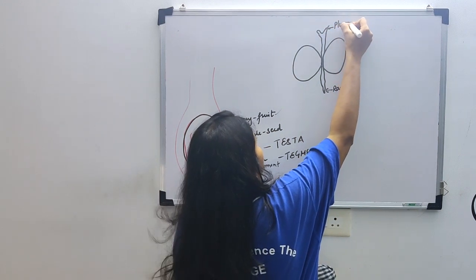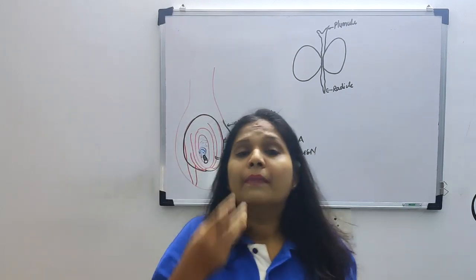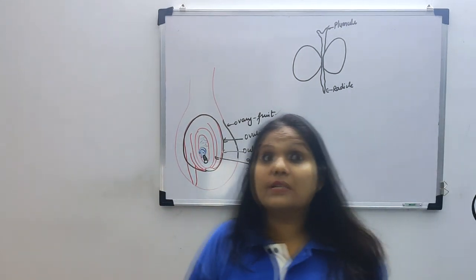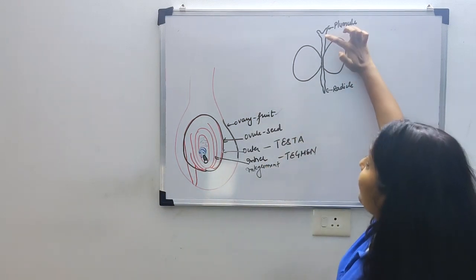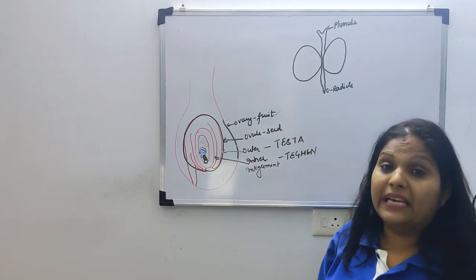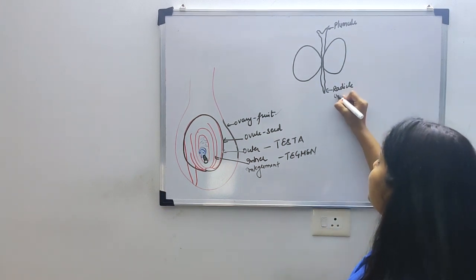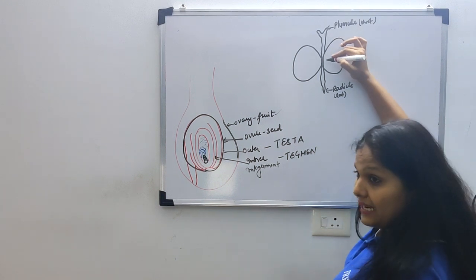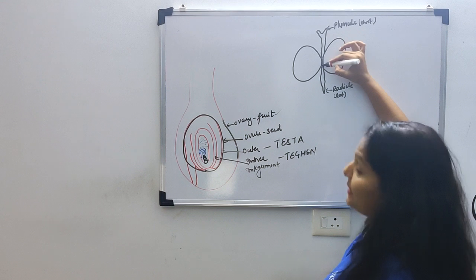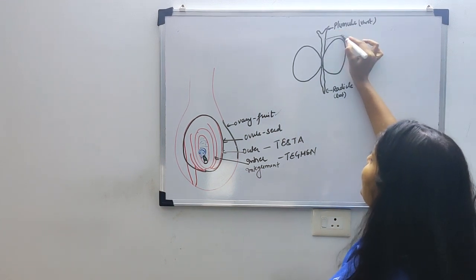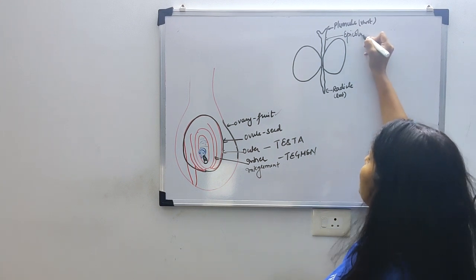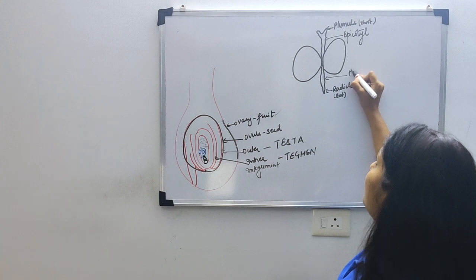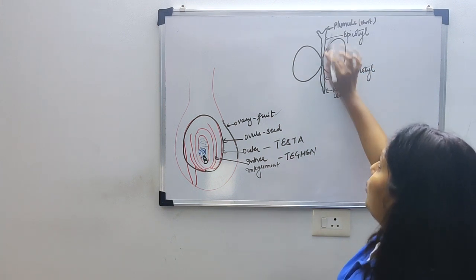If you keep it for one or two days, you will see a white color structure - that is nothing but the radicle. Keep it for some more time and then open the seed. You will see this structure comes out, and gradually you will see green color structure. Radicle develops into the root, and plumule develops into the shoot, which includes stem, leaves, etc. This is the embryonal axis point where cotyledon is attached.